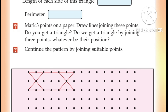Mark 3 points on a paper. Draw lines joining these points. Do you get a triangle? Do we get a triangle by joining 3 points, whatever be their positions? We mark 3 points on a paper, mark the up point, and connect the lines — here we get a triangle.